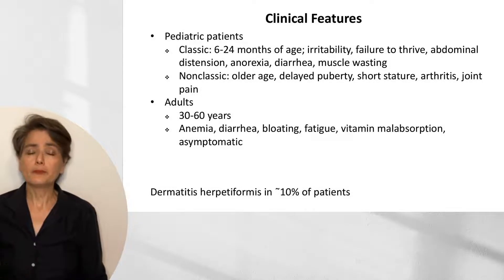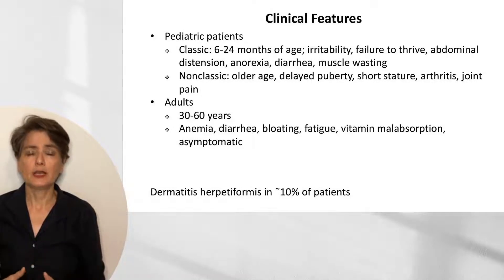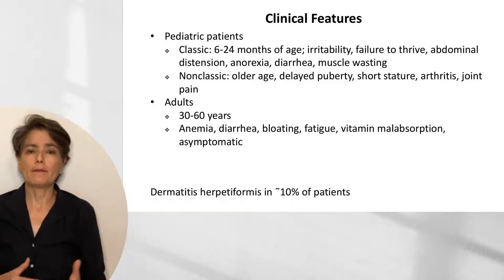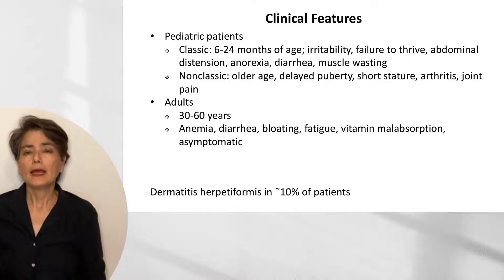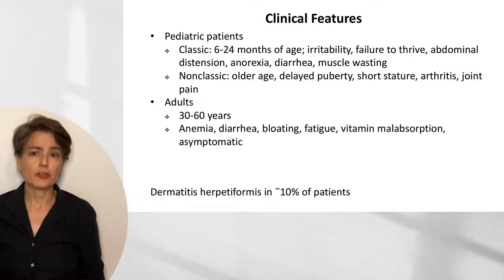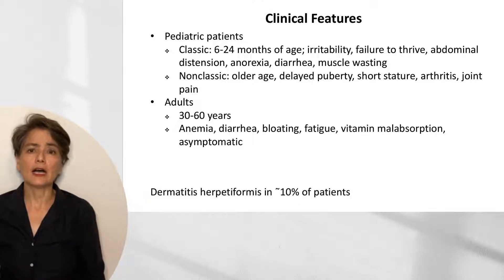So how do these patients present? In pediatric patients, the classic presentation will be children who are about 6 to 24 months old, which is at the time that gluten is typically introduced into an infant's diet. Children will then present with irritability, failure to thrive, weight loss, abdominal distension, anorexia, diarrhea, and muscle wasting.